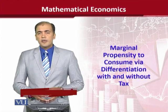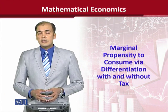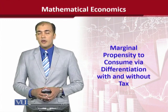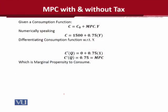That can be done by considering two cases: when there are no taxes and when there are taxes. Let us see this more precisely in the form of a numerical example. You can see that there is a consumption function, which is the standard form: C is equal to C0 plus MPC times Y. Setting numerical values, C0 is 1500 and MPC is 0.75.